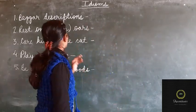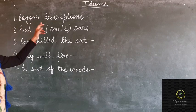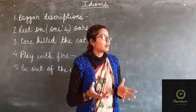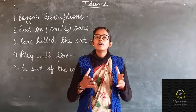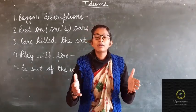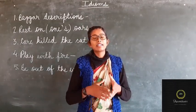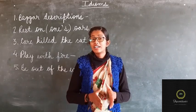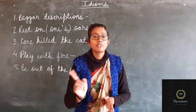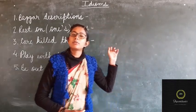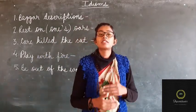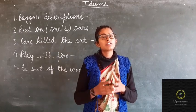The first idiom is 'beggars description.' The word beggar comes from the idea of poverty — the condition of poor people cannot be explained until you have felt it yourself. Taking the example of lockdown, the condition was worse; we saw the condition of the poor but did not feel it. So 'beggars description' means something which cannot be explained easily, something which is complex.